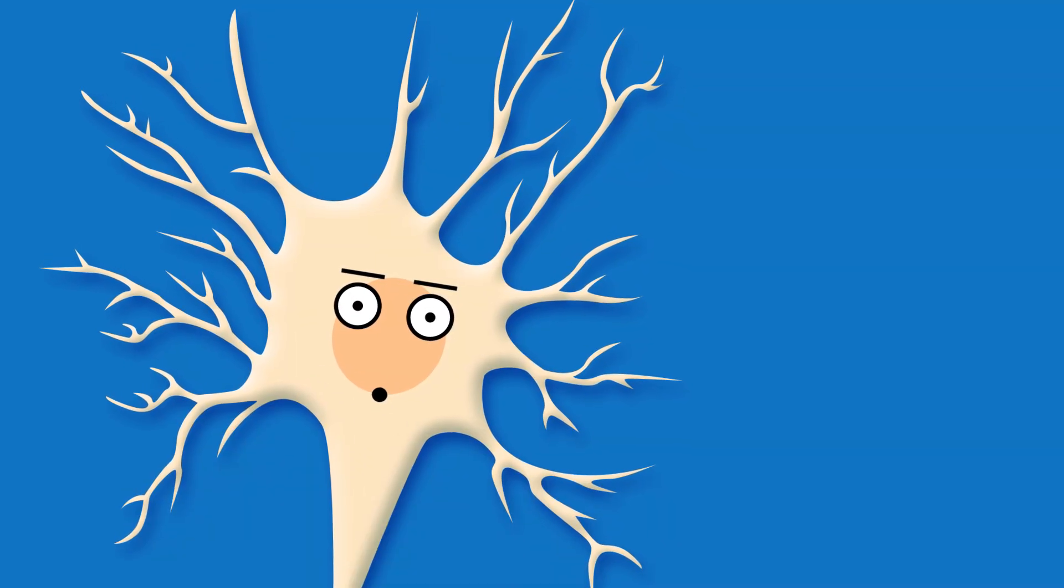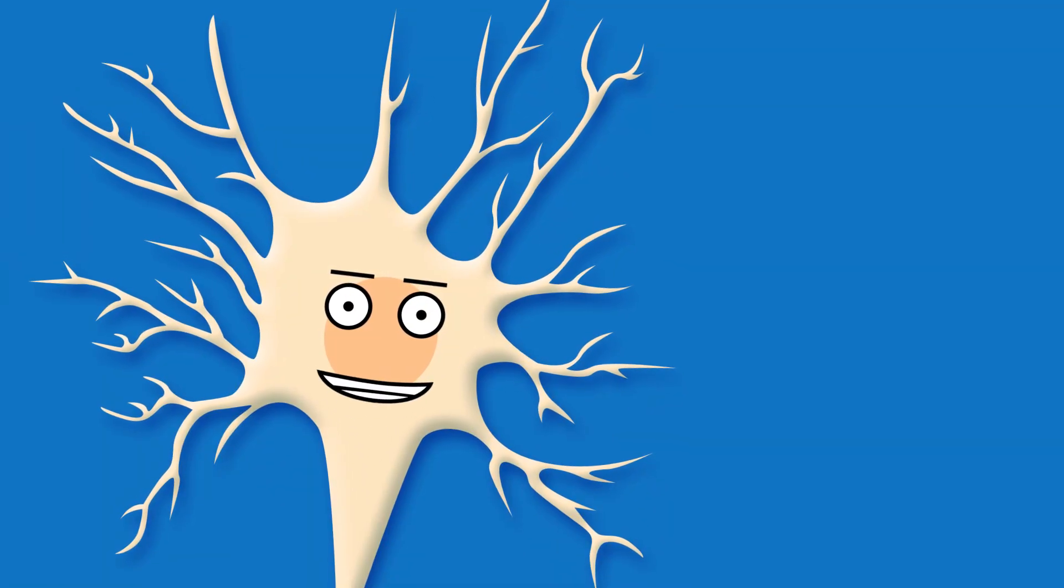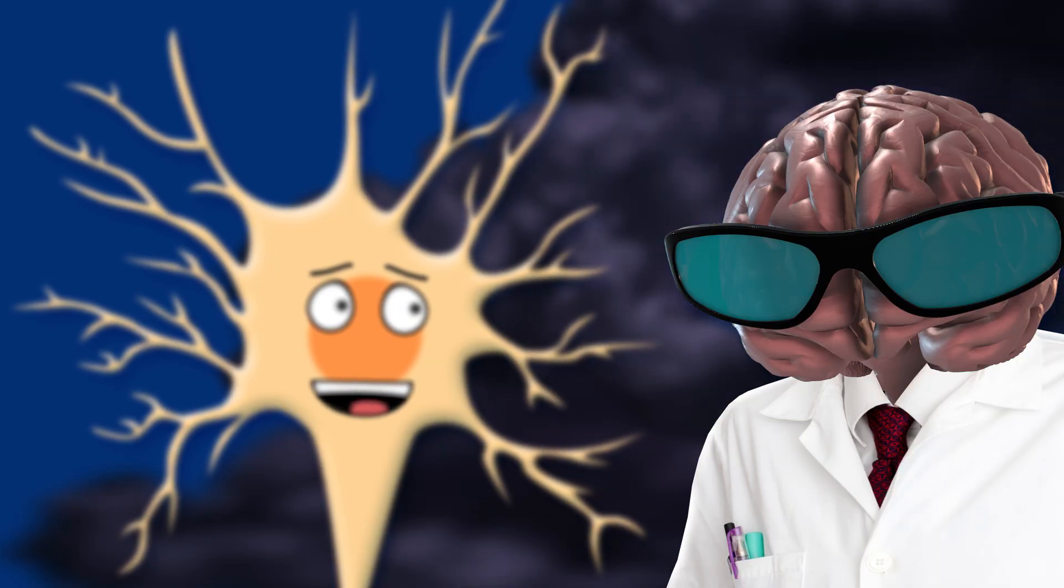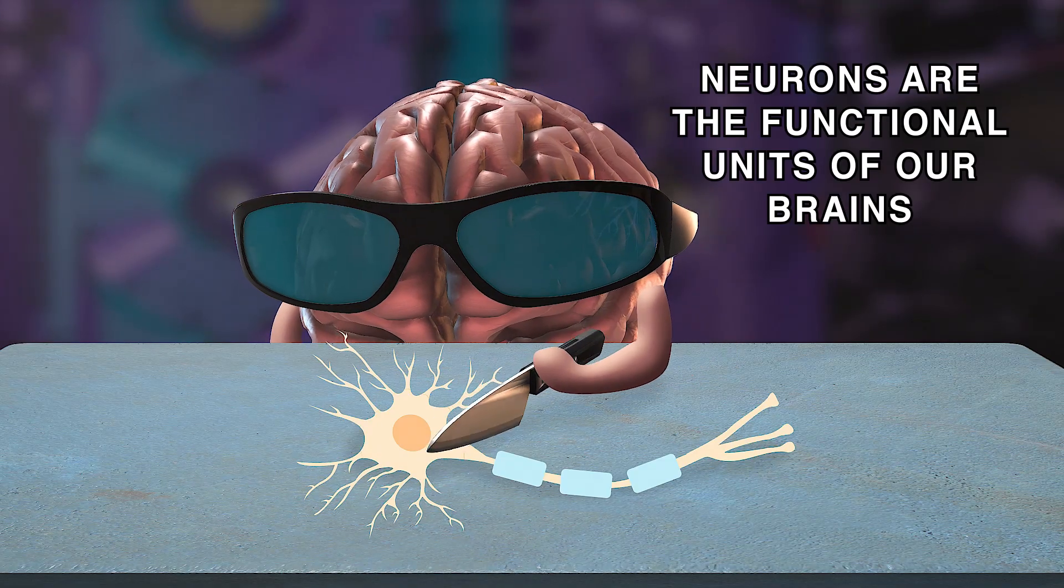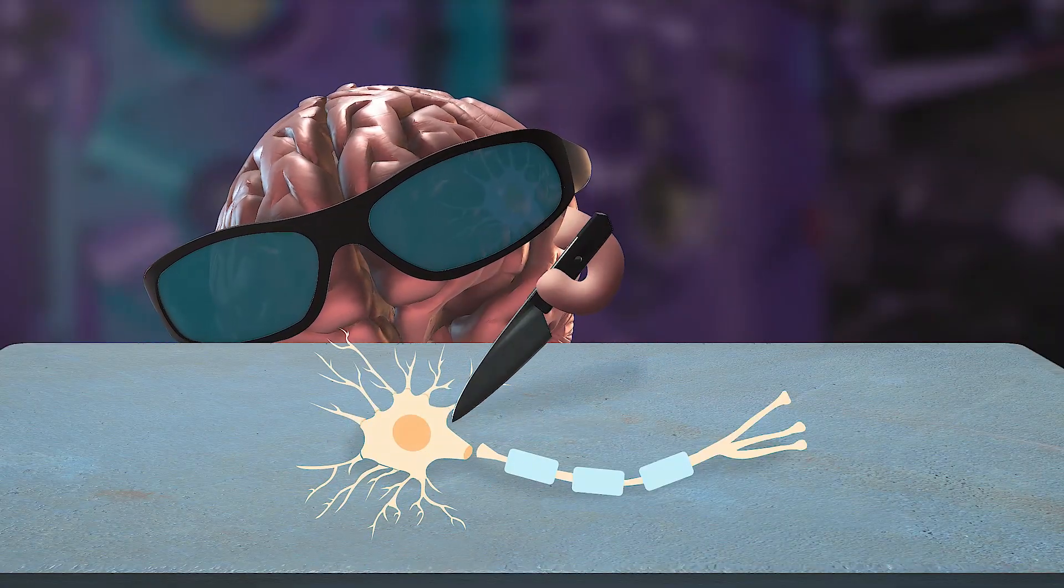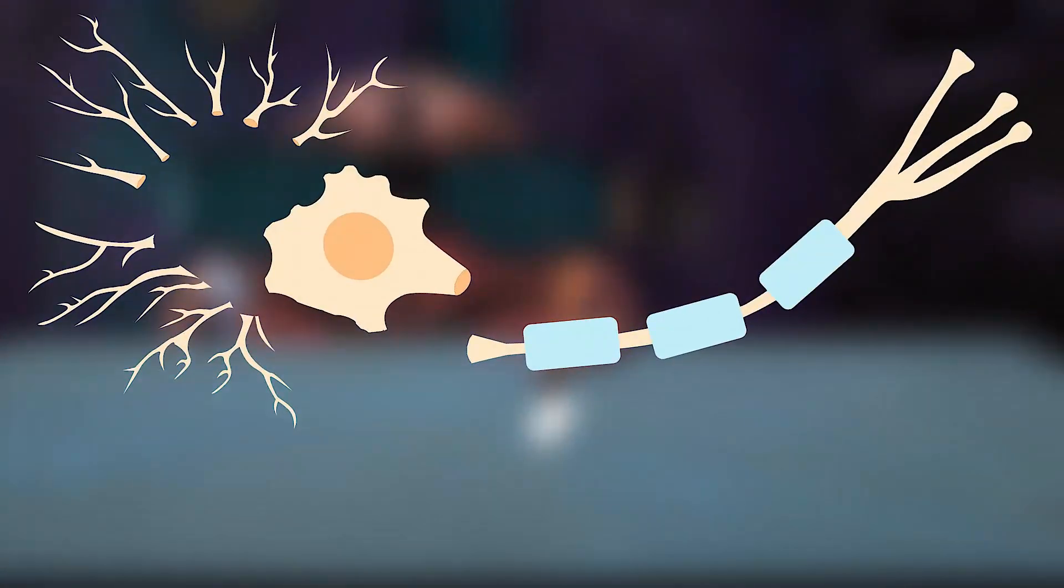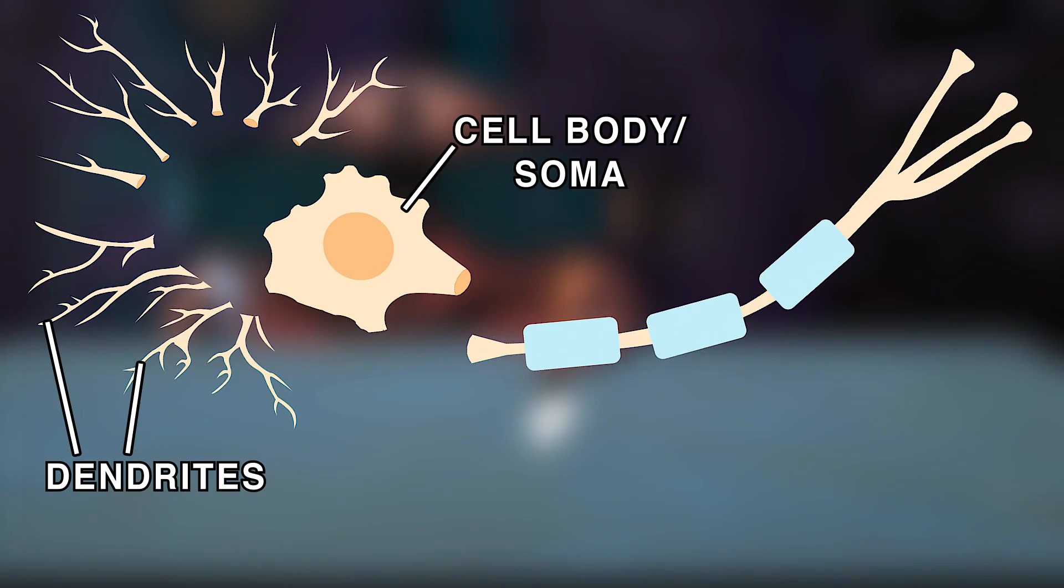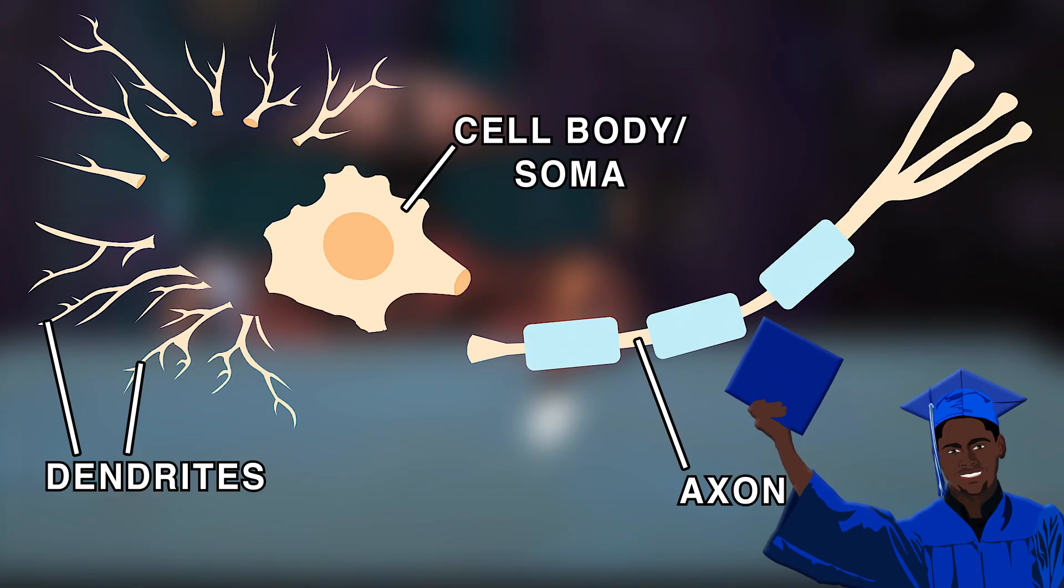And now in order to explain action potentials, we must first discuss neuron structure fundamentals. Neurons are the functional units of our brains, and they can be divided into three domains. Dendrites feed into the neuron cell body or soma, which then connects to an axon to earn you your diploma.